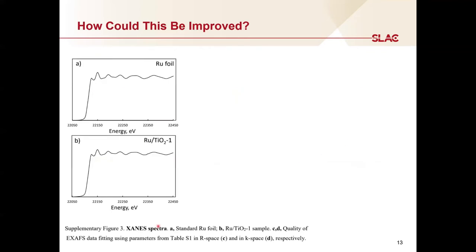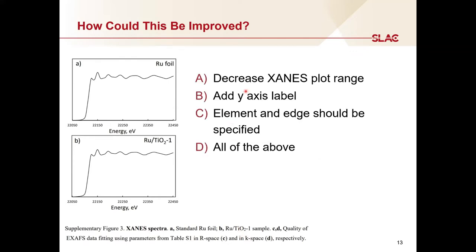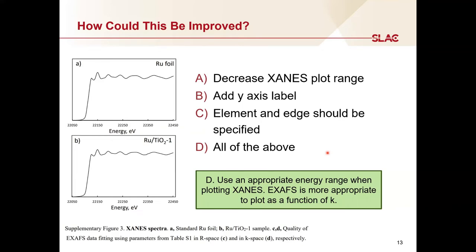Here's our first example. The caption tells us that we're looking at the XANES spectra of a ruthenium foil in A and a ruthenium TiO2 sample in B. How could this figure be improved? The answer is D — all of the above. The axis should be labeled as normalized absorption. The caption or figure itself should specify that this is the ruthenium K-edge. And importantly, when showing the XANES, you do not need to plot this far in energy. The energy range depends on where there are XANES features of interest, and that is element specific. In general, the maximum energy is on the order of tens of eV above the edge, not hundreds as seen in this image.